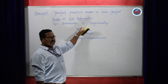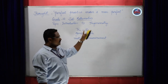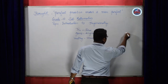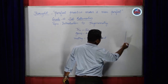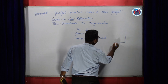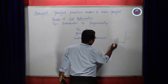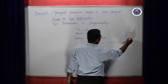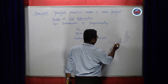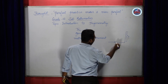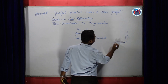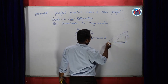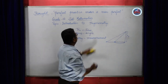With trigonometry, if you learn certain things, you can measure them. Like suppose there is a big tree and you have a pond — you want to know the height of the tree. By standing at the bank of the pond, you can measure the height of the tree if you know trigonometry.